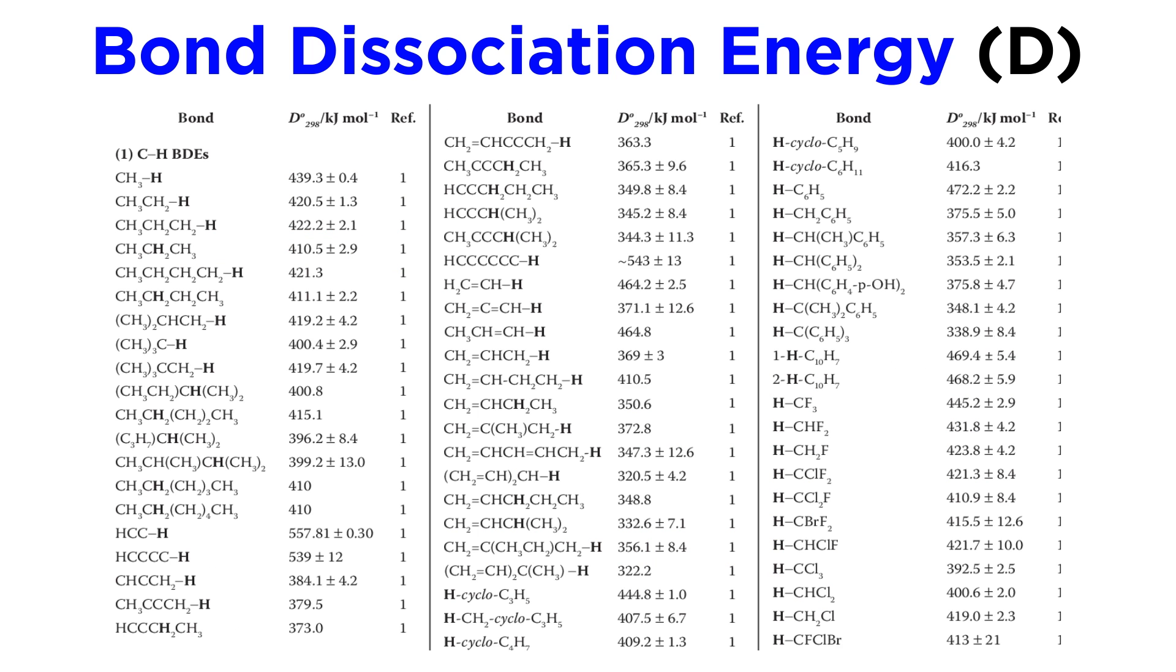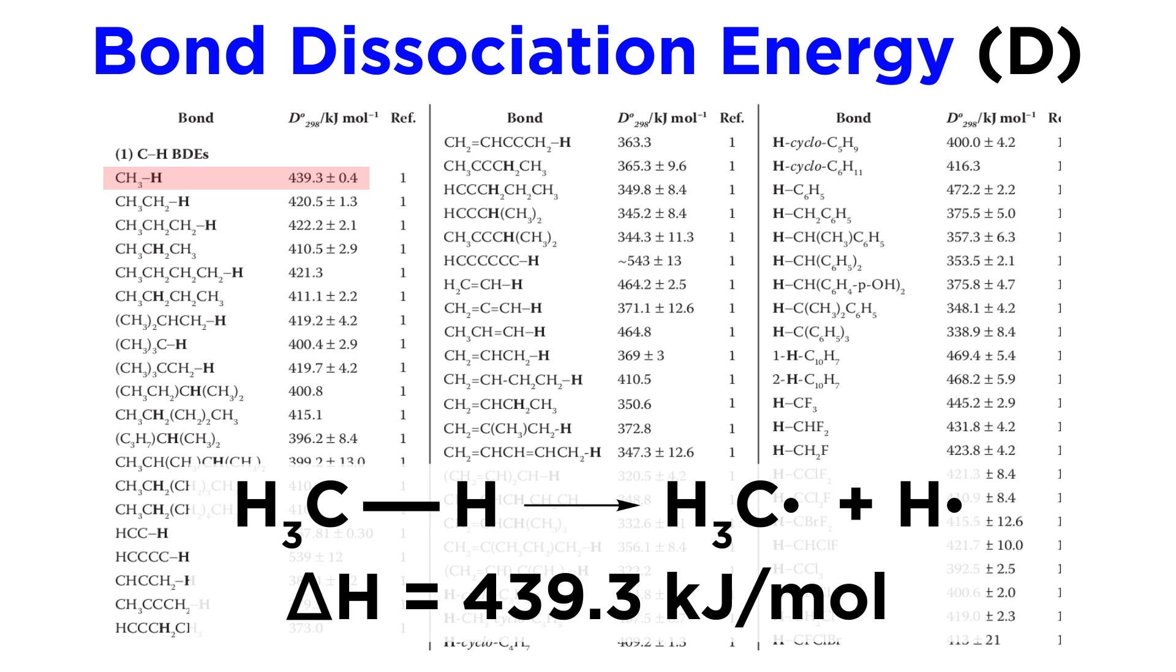Here are some examples of bond dissociation energies. In methane, a CH bond has a D value of 439.3 kJ per mole. This is the energy that must be supplied per mole of methane molecules for homolysis to occur in one CH bond per molecule, yielding a methyl radical and a hydrogen radical.